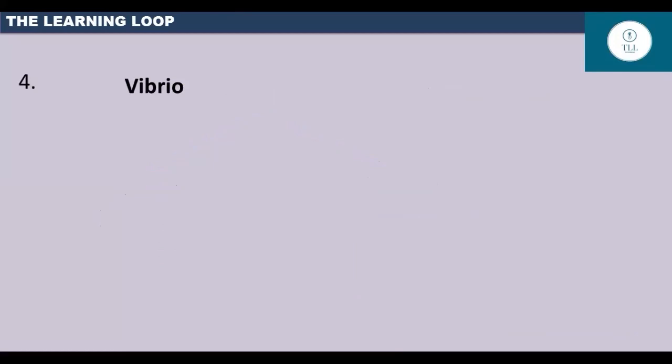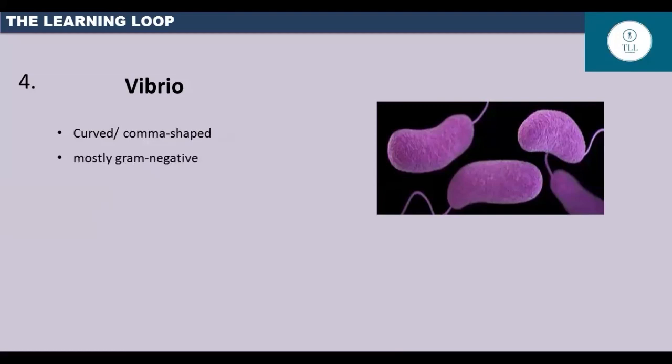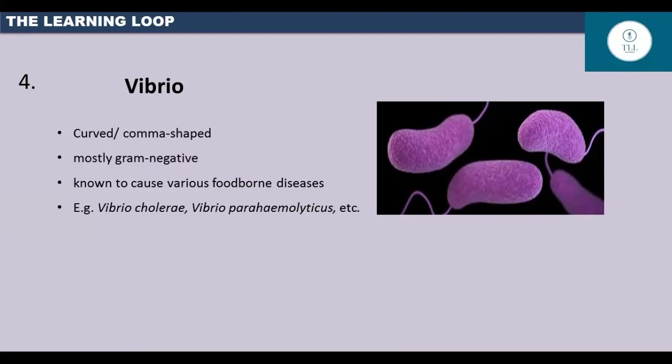The next type of bacteria are vibrio-shaped. These are comma-shaped bacteria. They are mostly gram-negative and are known to cause various foodborne diseases. For example, Vibrio cholerae causes cholera in humans.